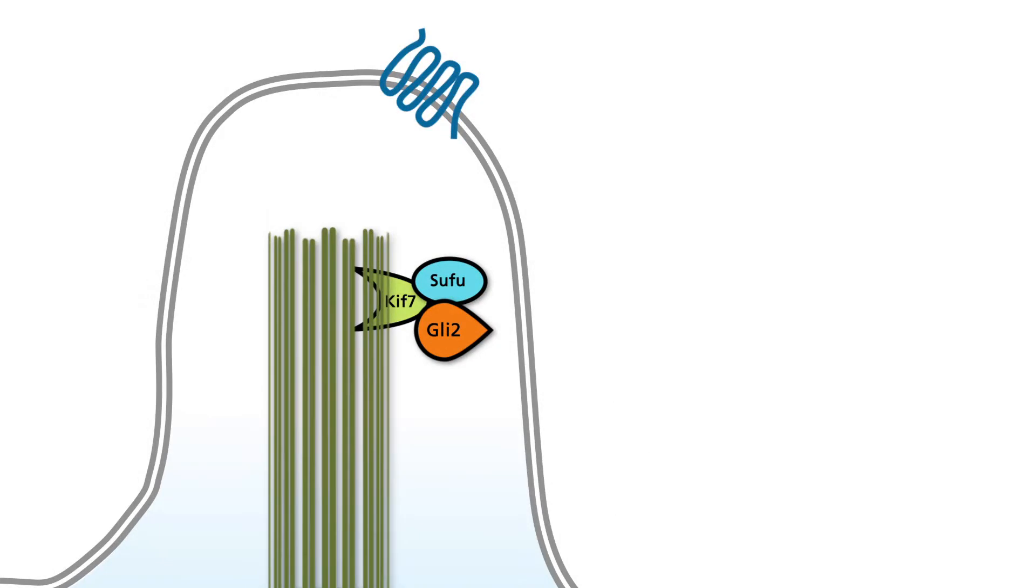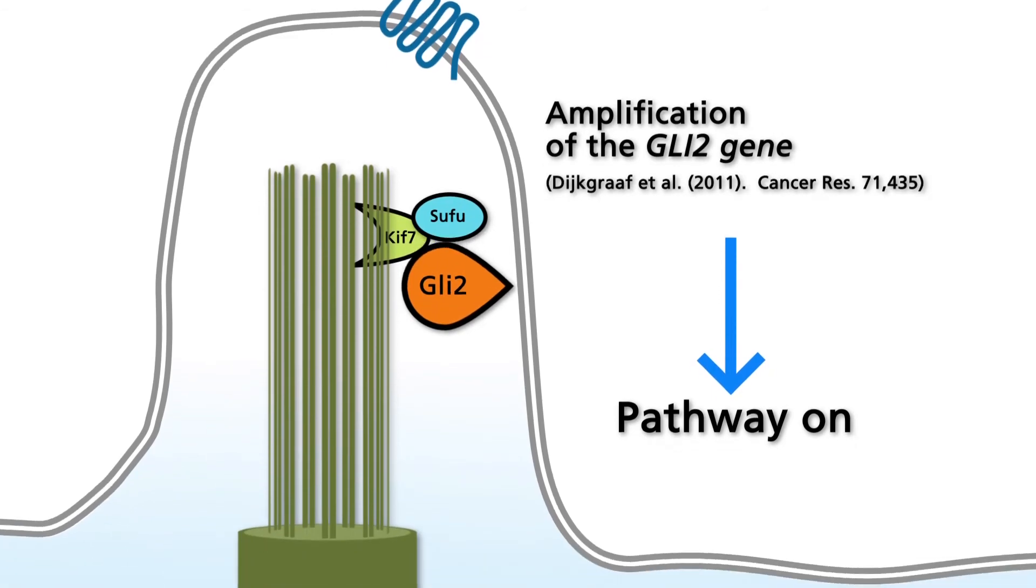Alternatively, the pathway may be activated downstream of smoothened via amplification of the GLI-2 gene.